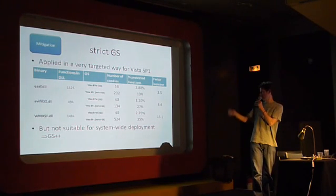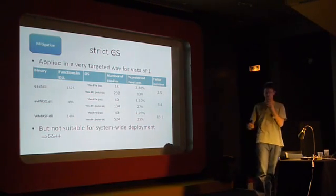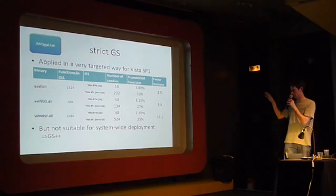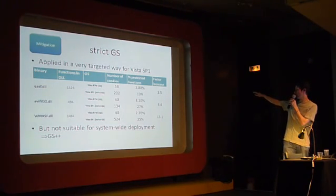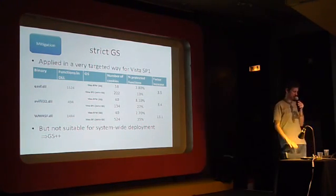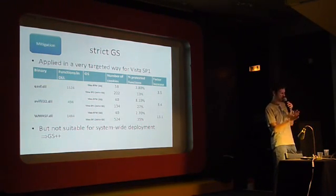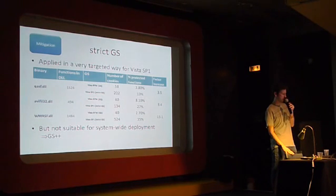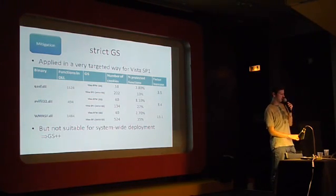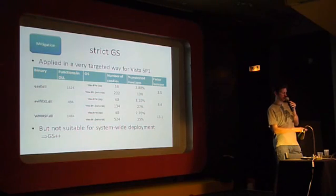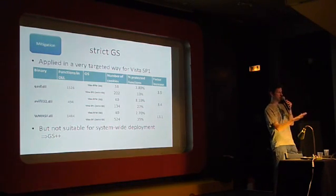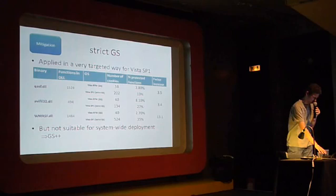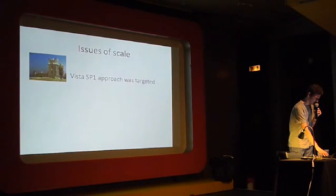So that's what we did — there are a couple of figures. The numbers themselves aren't hugely important, except that they're quite different. You can see the factor increase in number of GS-protected functions: for the first couple it was about a threefold increase — three times as many cookies, which is probably all right. The example at the bottom shows a 13-fold increase, with one third of functions being GS-protected. That's the kind of thing that made it impossible for us to consider applying this system-wide, so for system-wide deployment we were going to need something else.